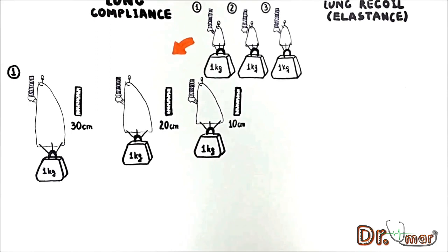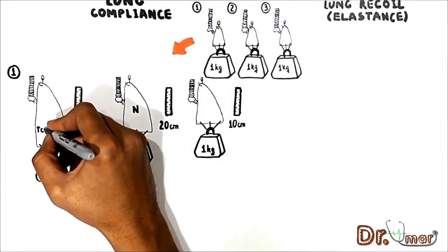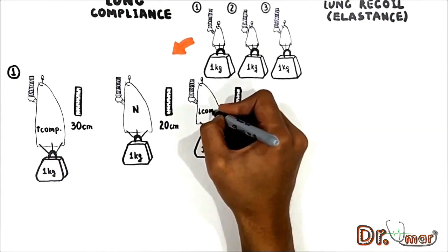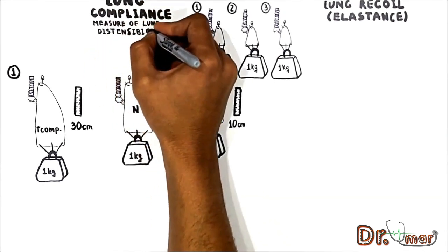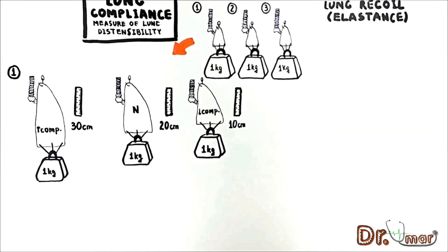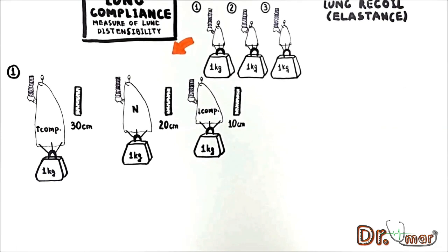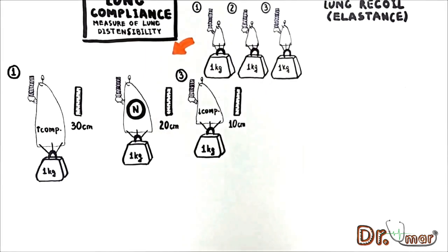This is because of different tissue compliance. If we consider the second lung, stretched 20 centimeters, as a normal compliant lung, we expect the first lung is more compliant and the third lung is less compliant. Compliance is a measure of lung distensibility. The first lung is easier to distend; the third is less compliant — stiffer — which is why it stretches only 10 centimeters under the same weight.